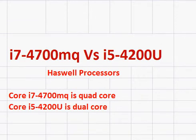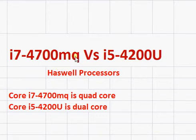Intel's Core i7-4700MQ and i5-4200U. The suffix MQ denotes a mobile quad-core processor and the suffix U denotes the ultra-low-voltage processor. The most important difference between these two processors is that the MQ part is a quad-core mobile processor, but it's not a low-power processor. The U part is a dual-core and it's a low-power processor.